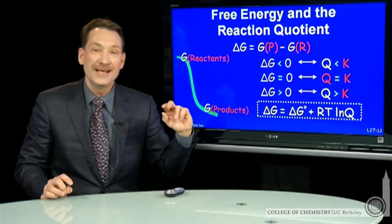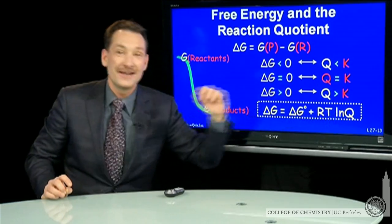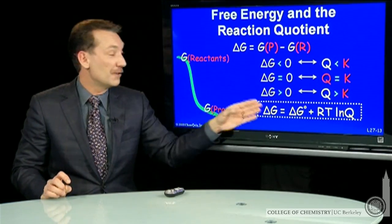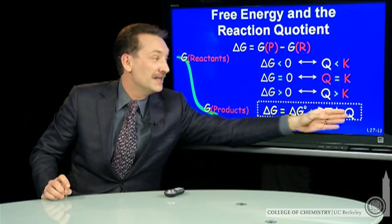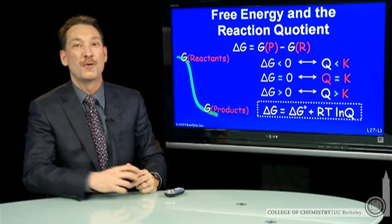So delta G varies based on that standard state and the concentrations. And we have a nice formula that relates free energy to the conditions that exist right now: Q, the reaction quotient.